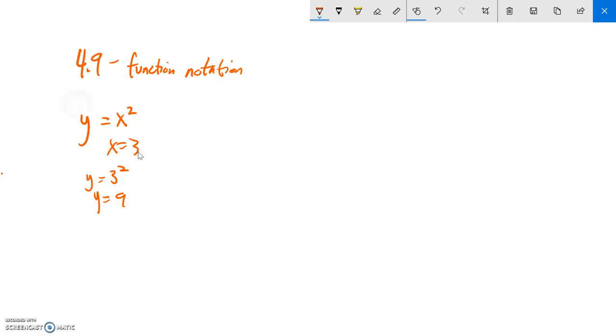Here's how this would look in function notation. f of x equals x squared. Now there's a couple different ways to think of f of x. One way is it's just a y. And another way I'll talk about in a minute. But instead of saying x equals 3, we'll say f of 3.